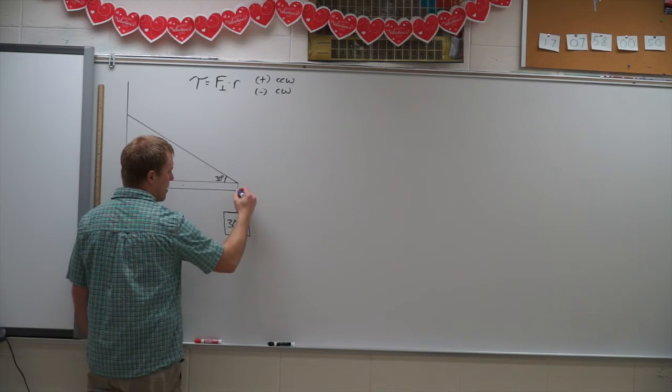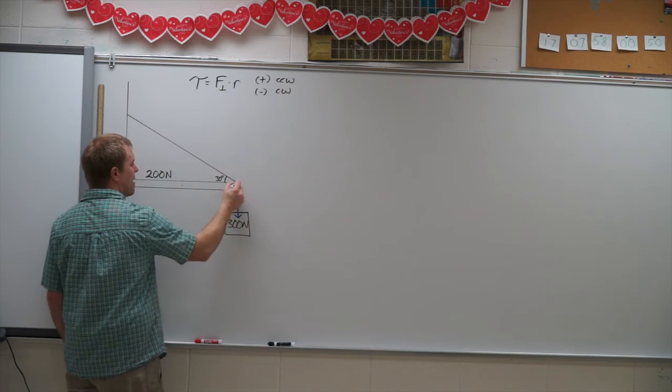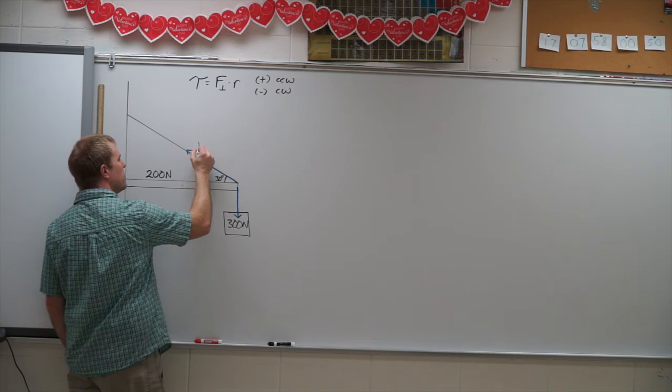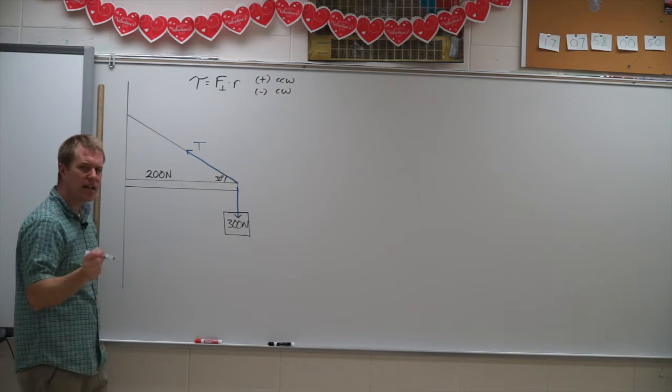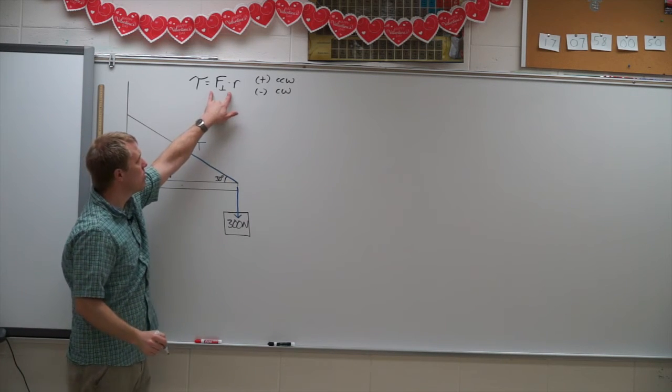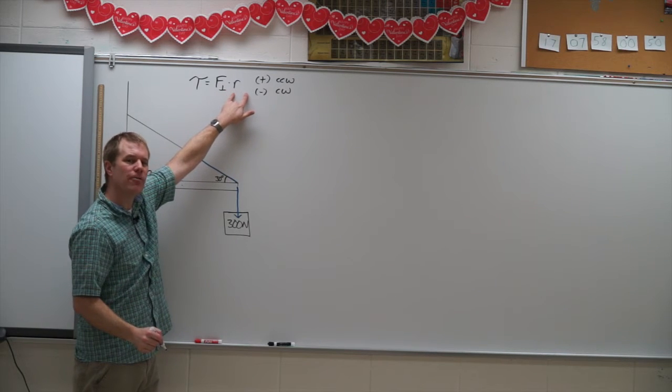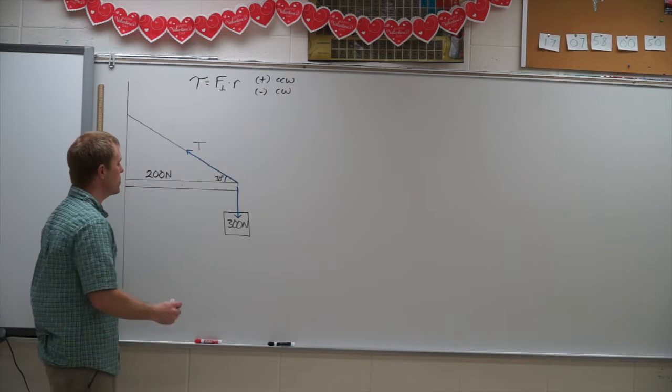So the first thing we're going to do is draw a free body diagram. So I have my 300 Newtons acting down here. I have my tension acting up here. And because this chapter with force times the lever arm, we are very careful about where we locate these forces.